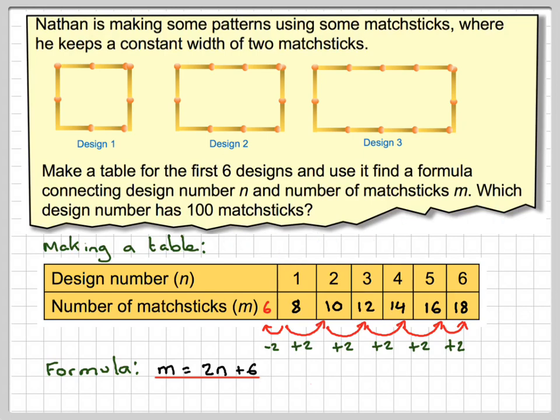It says now, which design number has 100 matchsticks? So when m is equal to 100, we're going to have that 100 is equal to 2n plus 6. We now solve that.